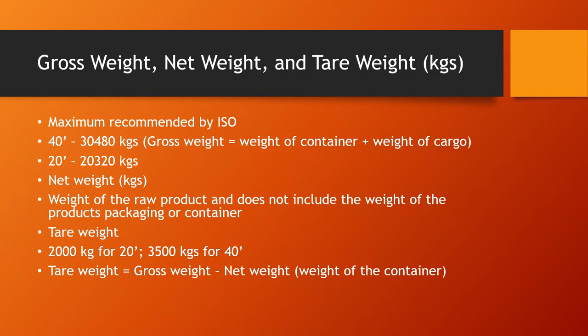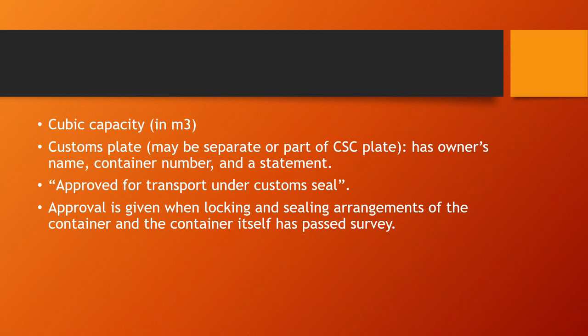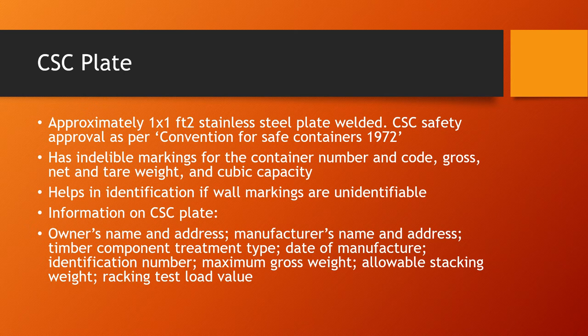Then we have the cubic capacity of the container provided in cubic meters. The customs plate is also attached — it may be a separate plate or part of the CSC plate. The customs plate contains the owner's name, the container number, and a statement confirming that the container is approved for transport under customs seal. Approval is granted when the locking and sealing arrangements and the container itself have passed the required survey.